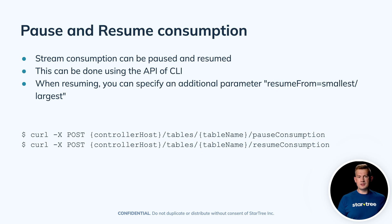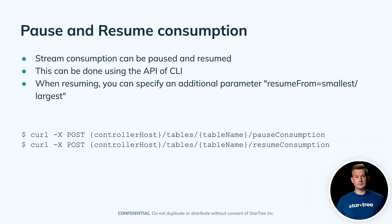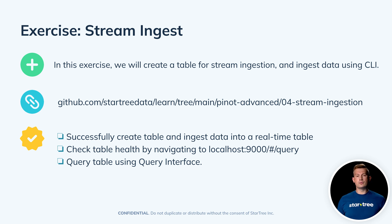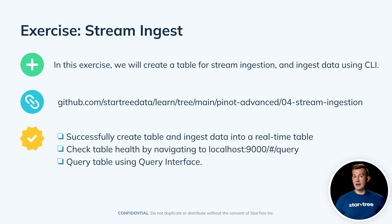Stream ingestion can be paused and resumed. In case you need to stop data from arriving, you can use the API or CLI to pause this ingestion, and you can resume it afterwards. I strongly recommend going to the stream ingestion folder inside the Pinot advanced GitHub repository to learn about configurations. The Docker Compose will include everything you need, including Kafka, so you can practice your streaming ingestion skills. You'll be able to create real-time tables, configure stream ingestion, and then query these tables to validate that data has arrived into Pinot.